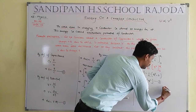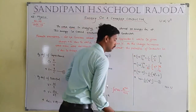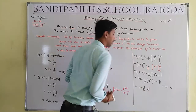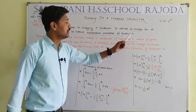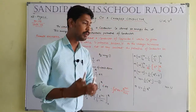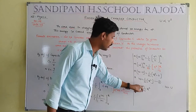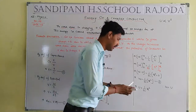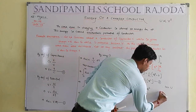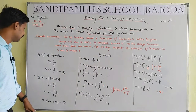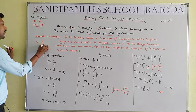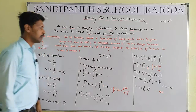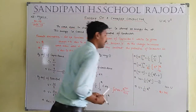Since W equals U, we get U equals 1 by 2C into Q squared. But we have to prove U is directly proportional to V squared. We need to eliminate Q. From Equation Number 1, V equals Q by C. By cross multiplication, Q will be equal to V times C.